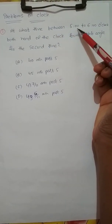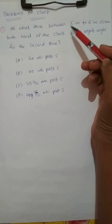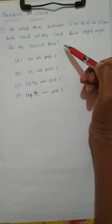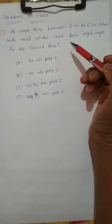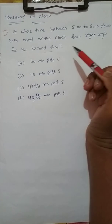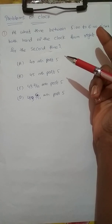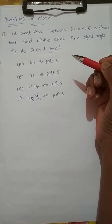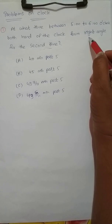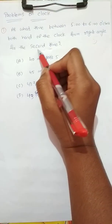First question: At what time between 5 to 6 o'clock do both hands of the clock form a right angle for the second time? So the question is between 5 to 6, when is the right angle formed for the second time? One right angle is formed first, then a second right angle is formed.